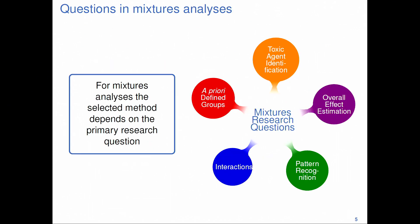The next most important thing when starting a mixtures analysis is: what do we want to learn from that mixture? Depending on what research question we have, that will help us select the most appropriate method for mixtures analysis. There are several potential questions we might be interested in. For example, I might want to know what the toxic agent or agents are among my mixture members, the overall mixture effects, or pattern recognition in my exposures. Based on a well-defined research question, I subsequently select an appropriate method.